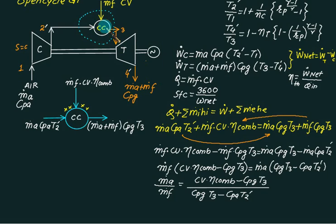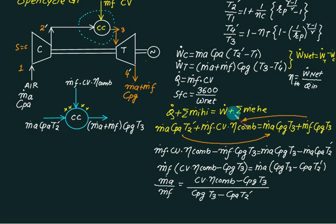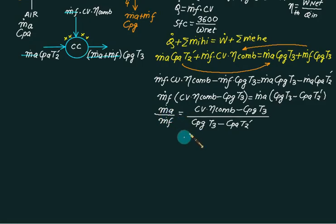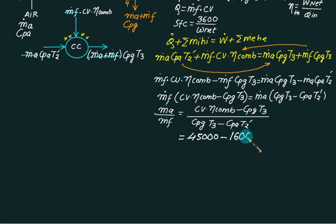To remember this, draw the combustion chamber with arrows: air in with m-dot-a, cp_a, T2-dash; fuel in with m-dot-f × CV; mixture out with (m-dot-a + m-dot-f), cpg, T3. Apply conservation of mass and conservation of energy. The numerator corresponds to one temperature difference and the denominator to the other. With CV ≈ 45,000 kJ/kg, combustion efficiency ≈ 1, and cp_a ≈ cpg ≈ 1 kJ/kg·K, you can estimate the ratio numerically.